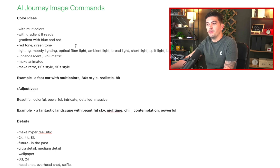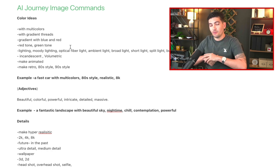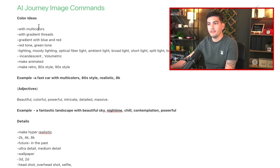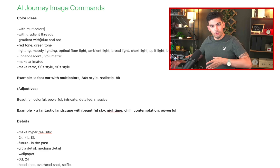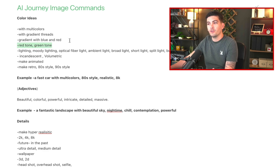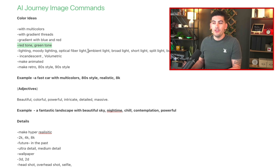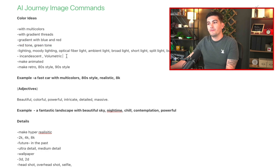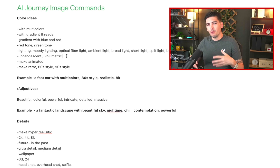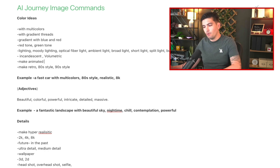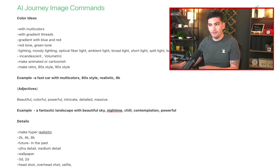Here's a list of keywords you can use to make your images look more creative. With color ideas, you can use terms like multi colors, gradient threads, gradient with specific tones like red or blue, or just a red tone or green tone. You can also adjust the lighting — moody lighting, ambient lighting, broad lights, short lights — to make it look more accurate. You can also add very descriptive words like incandescent and volumetric to add more tone to the image. And you can add 'make animated,' 'cartoonish,' 'clay figure,' or get as descriptive as you can possibly think of.